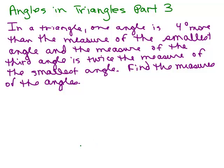Alright, let's go ahead and try this. In a triangle, one angle is four degrees more than the measure of the smallest angle, and the measure of the third angle is twice the measure of the smallest angle. Find the measures of the angles.